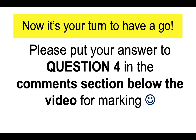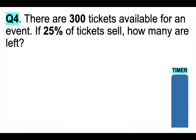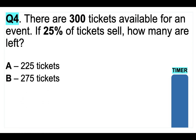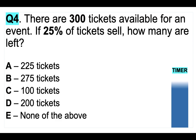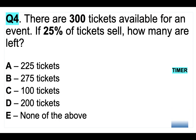Now it's your turn. Please put your answer to question 4 in the comments section below for marking. There are 300 tickets available for an event. If 25% of tickets sell, how many are left? Is it A) 225, B) 275, C) 100, D) 200, or E) none of the above? You have the time the timer takes to go down to put your answer in the comments below.